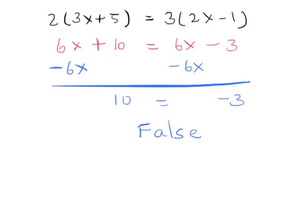What that means is whatever x value goes into this equation, it would produce this end result 10 equals negative 3, which is false. Therefore, there's no x that can go into this equation and make sense out of it.